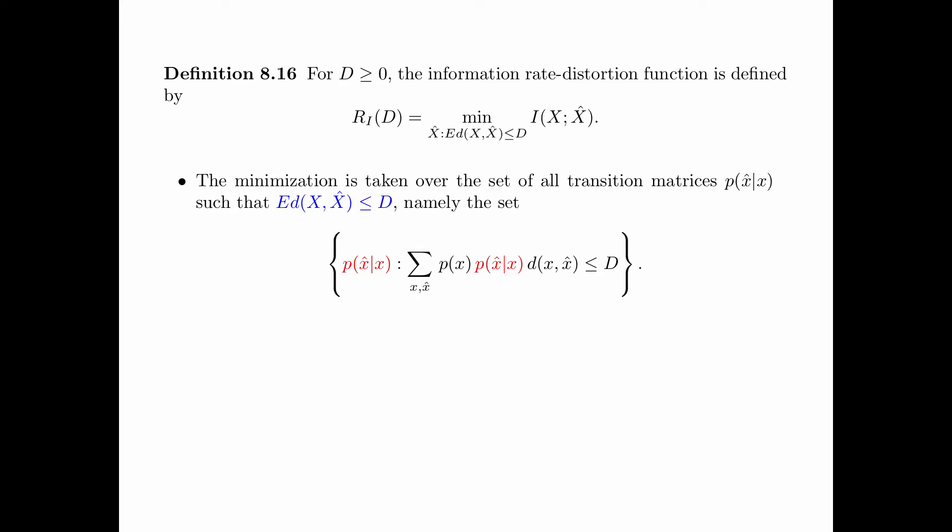We first define the information rate distortion function R_I(d). For d greater than or equal to 0, the information rate distortion function is defined by R_I(d) equals the minimum of I(x; x-hat) over all x-hat such that the expectation of the distortion between x and x-hat is less than or equal to d. The minimization is taken over the set of all transition matrices p(x-hat | x) such that the summation over x, x-hat of p(x) times p(x-hat | x) times d(x, x-hat) is less than or equal to d.